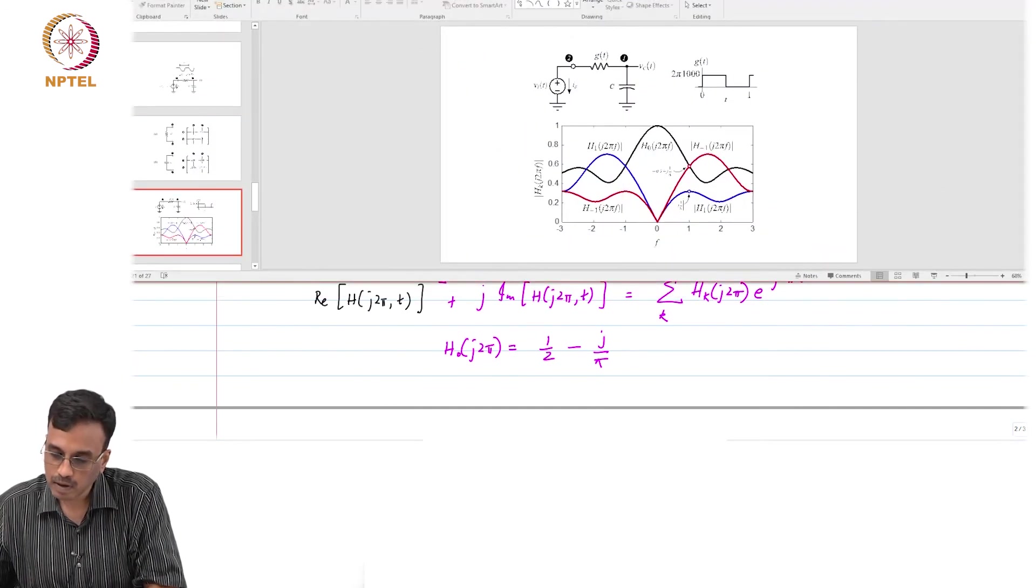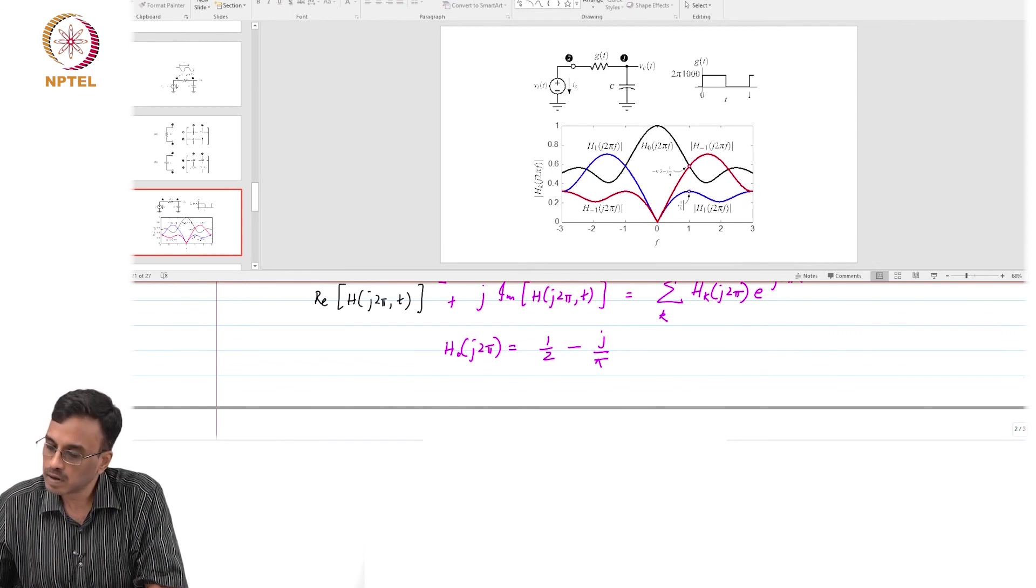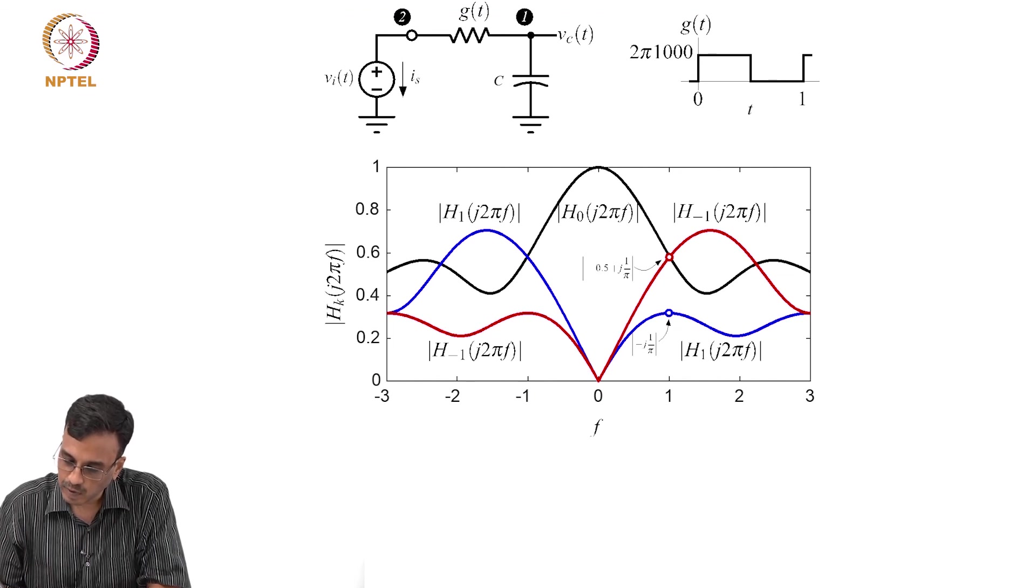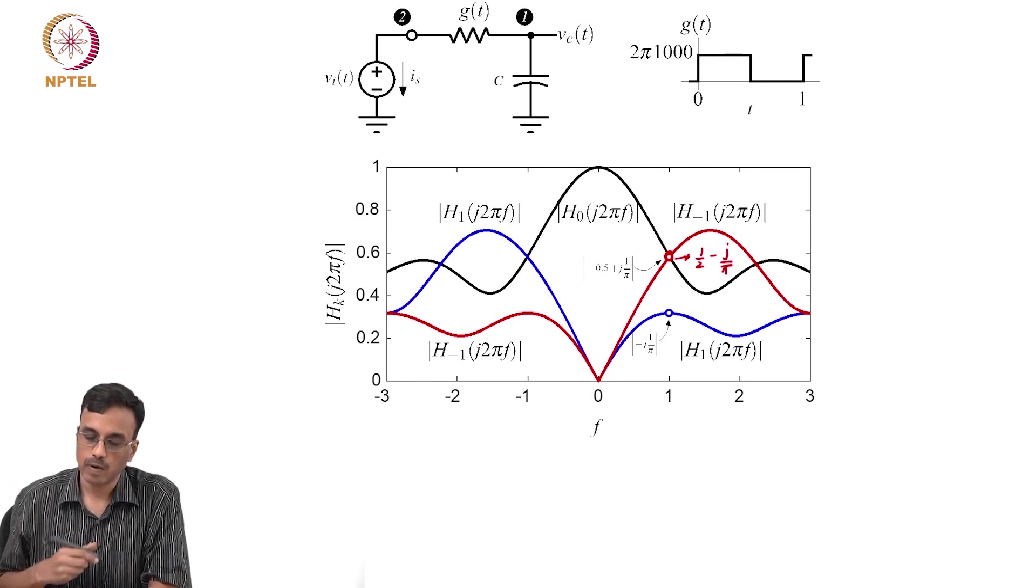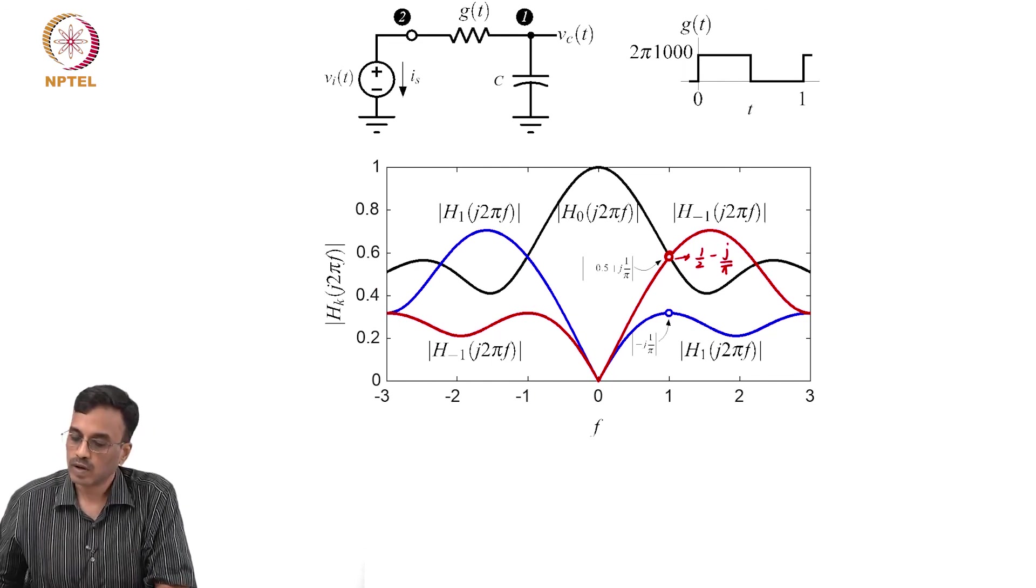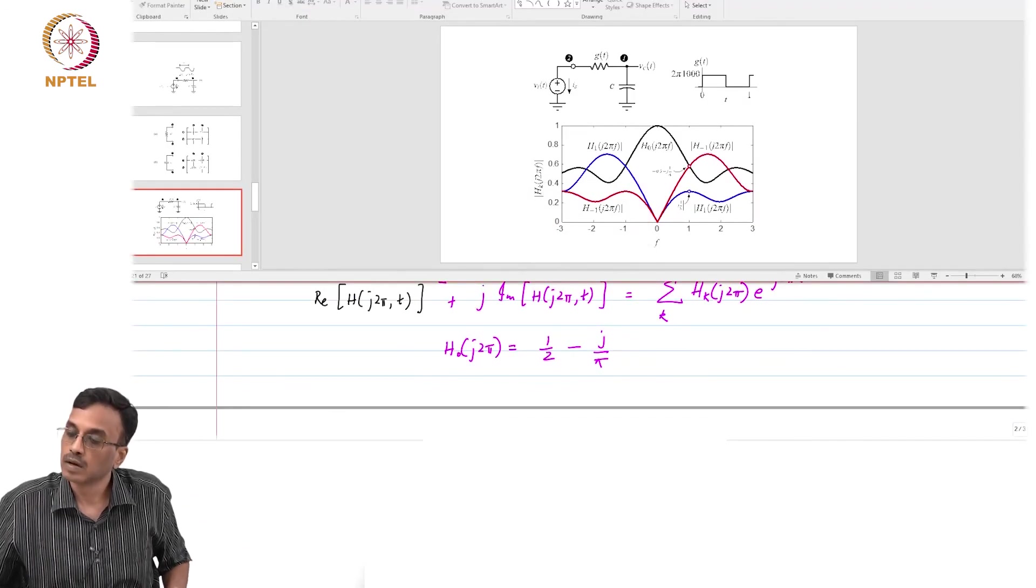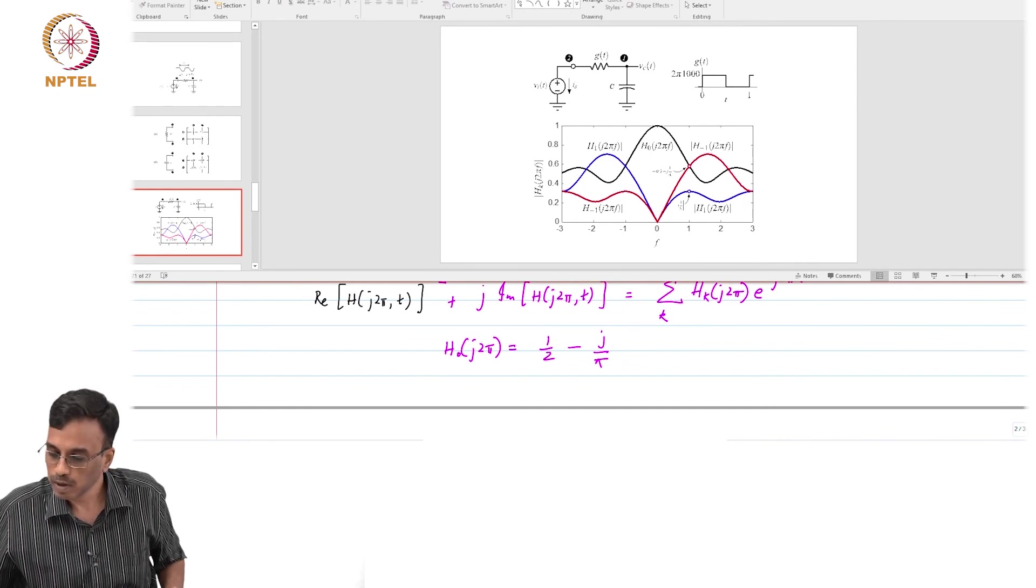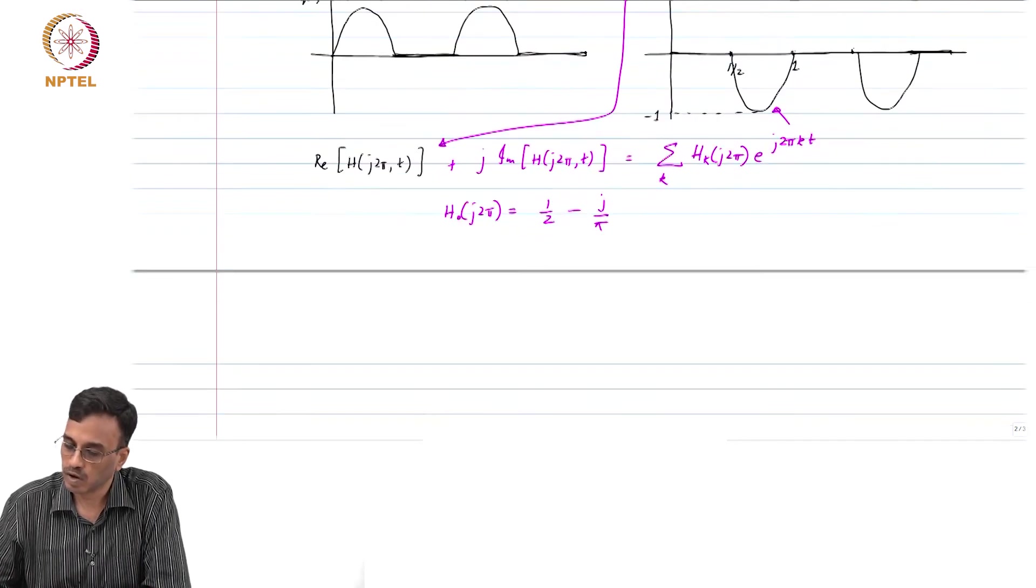Let us see if that makes sense. Yeah, this value here happens to be half minus j by π, alright. Now, H - so the magnitude is, you know, what do you call, square root of 1/4 plus 1/π². Now, the next thing I would like to draw your attention to is the following.